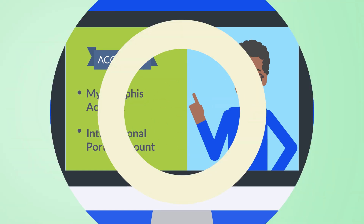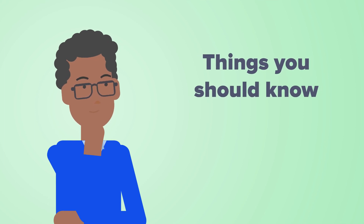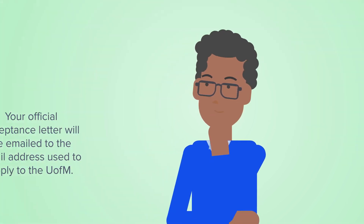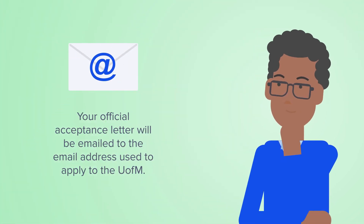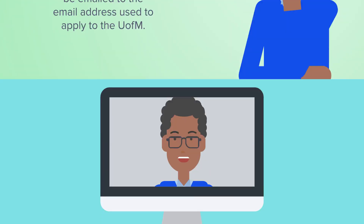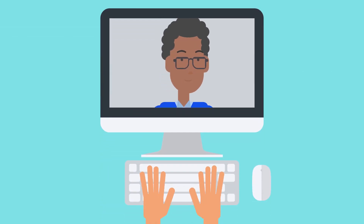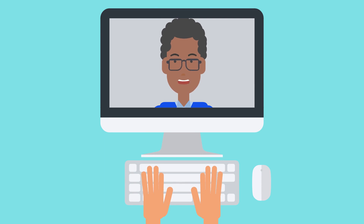However, before setting up your account, there are some things you should know. You cannot set up your accounts without your official U of M Acceptance Letter. Your official acceptance letter will be emailed to the email address used to apply to the U of M. Remember, check your spam box. The letter will look something like this.